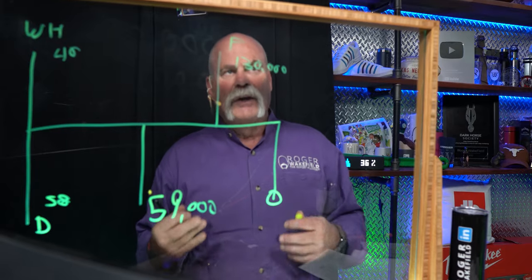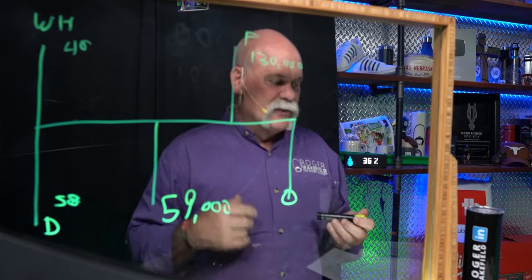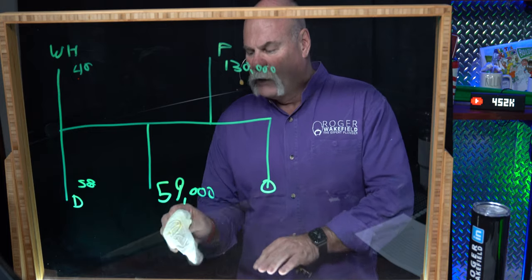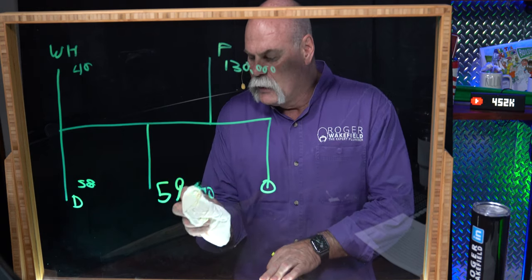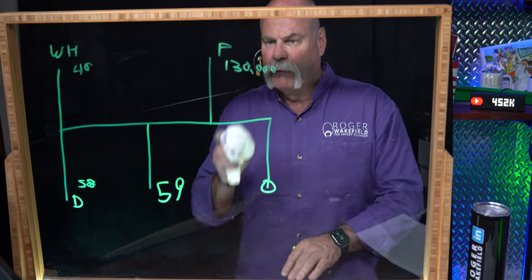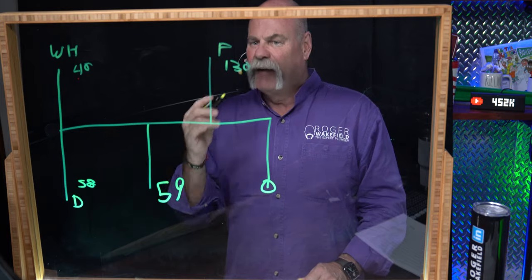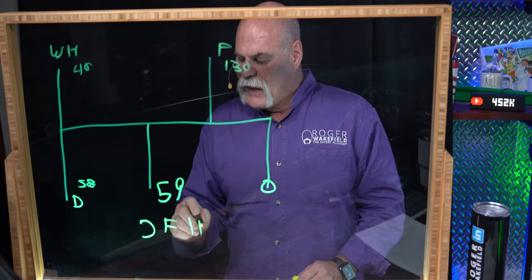To get cubic feet per hour, you divide each BTU value by 1,000. So we're looking at 40, 28, 59, and 130 cubic feet per hour. This is what I'm going to build my entire system on.